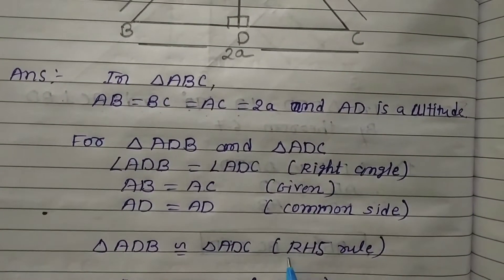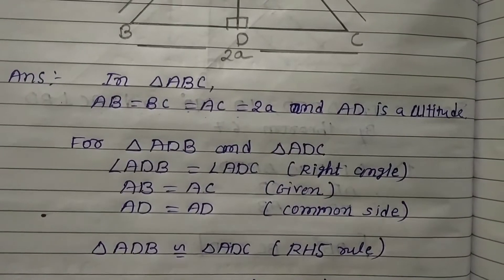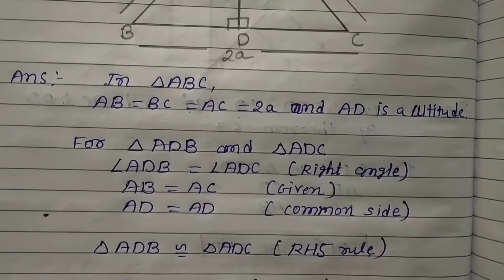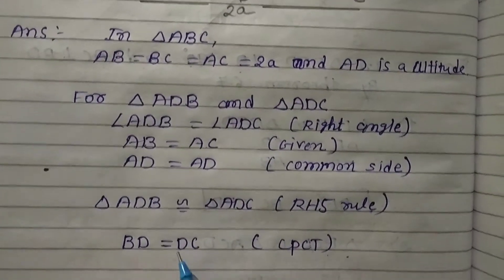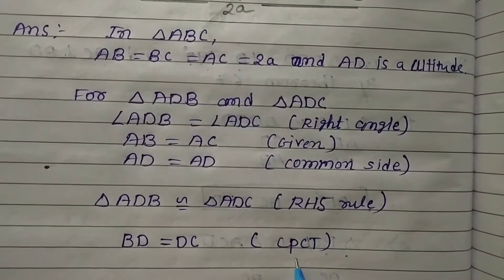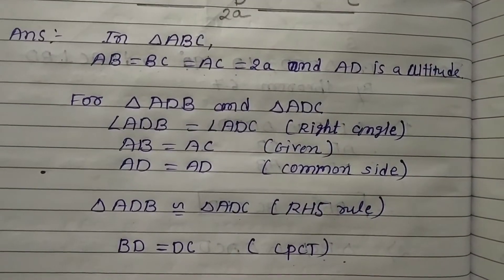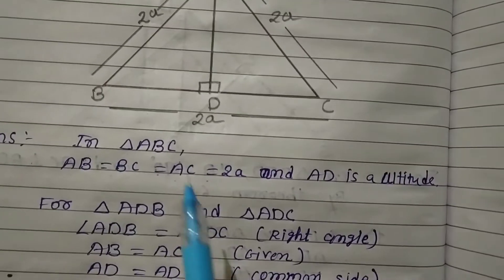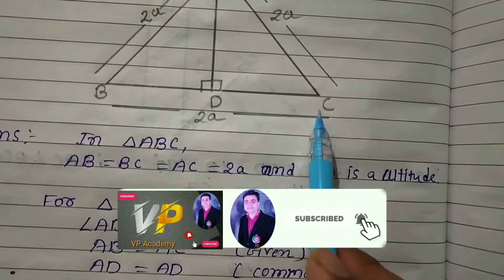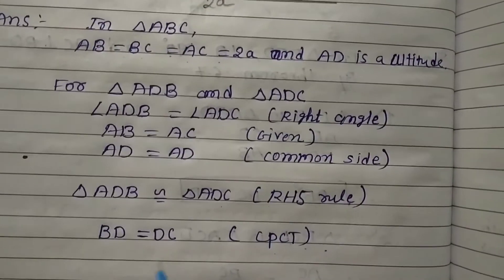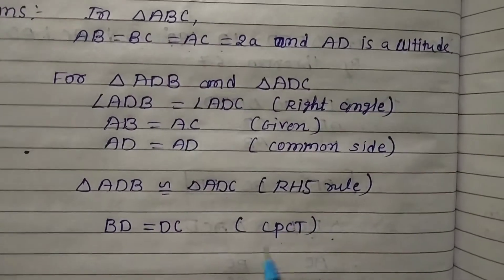So by CPCT, BD = DC. Now see the figure. BD + CD = BC, but we get BD = DC.